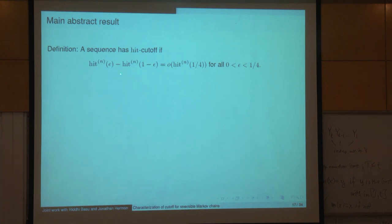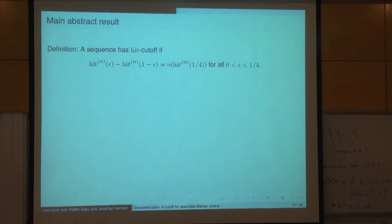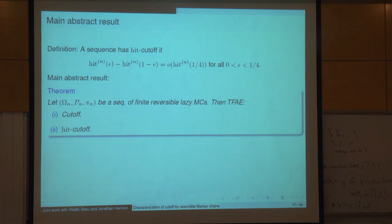This is an analog of the t_mix parameter — it's the tail of hitting times for the worst set and the worst starting point. The key general theorem is that cutoff is equivalent to cutoff of hitting times. A sequence of chains has hitting cutoff if hit_N(ε) minus hit_N(1−ε) is negligible compared to hit_N(1/4).